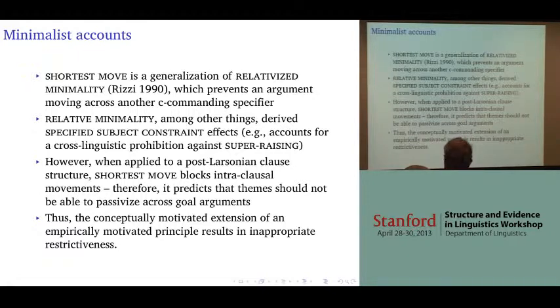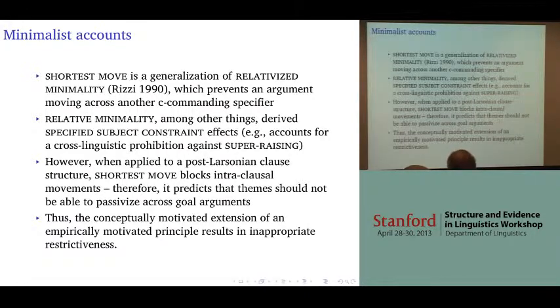Shortest move is a generalization of relativized minimality, which prevents an argument from moving across another c-commanding specifier. However, relativized minimality was formulated in much simpler times, and among other things derived the Specified Subject Constraint, which was a fairly well-motivated empirical constraint that disallowed super-raising.